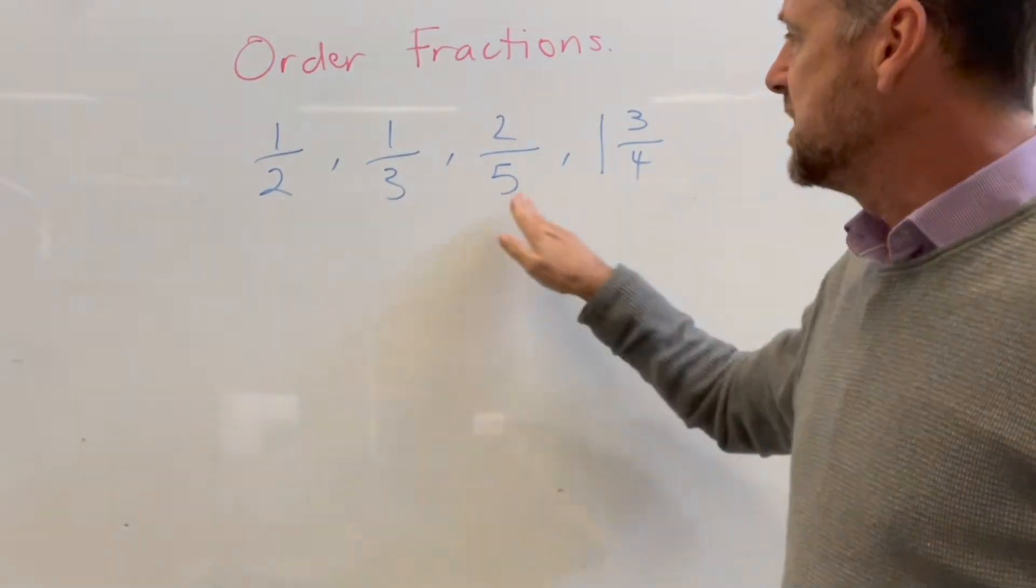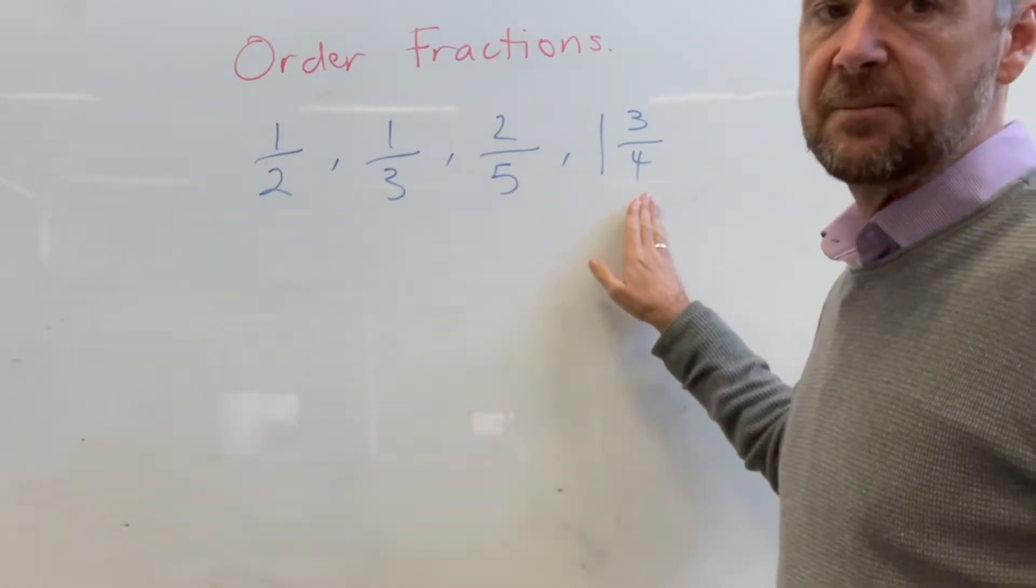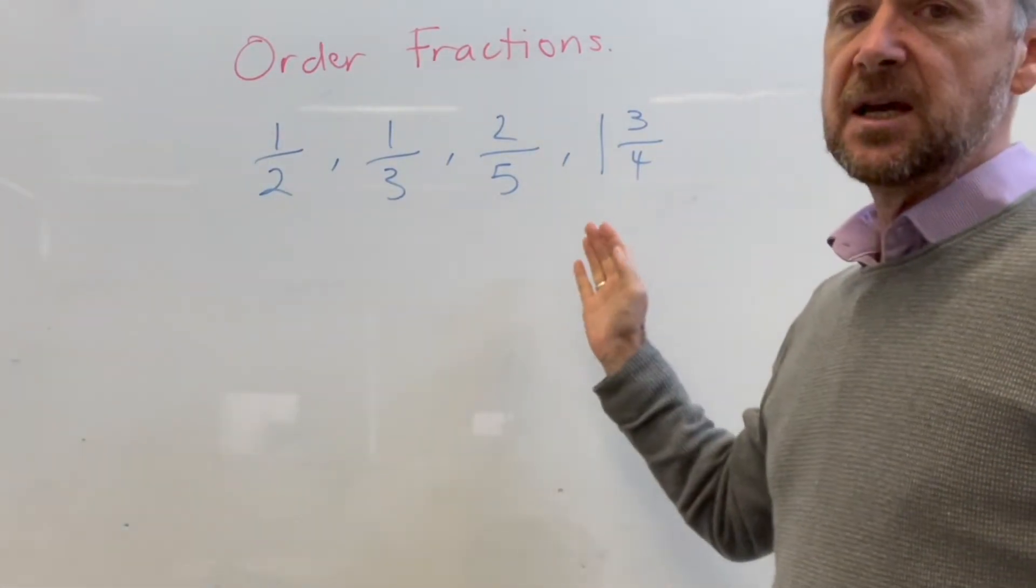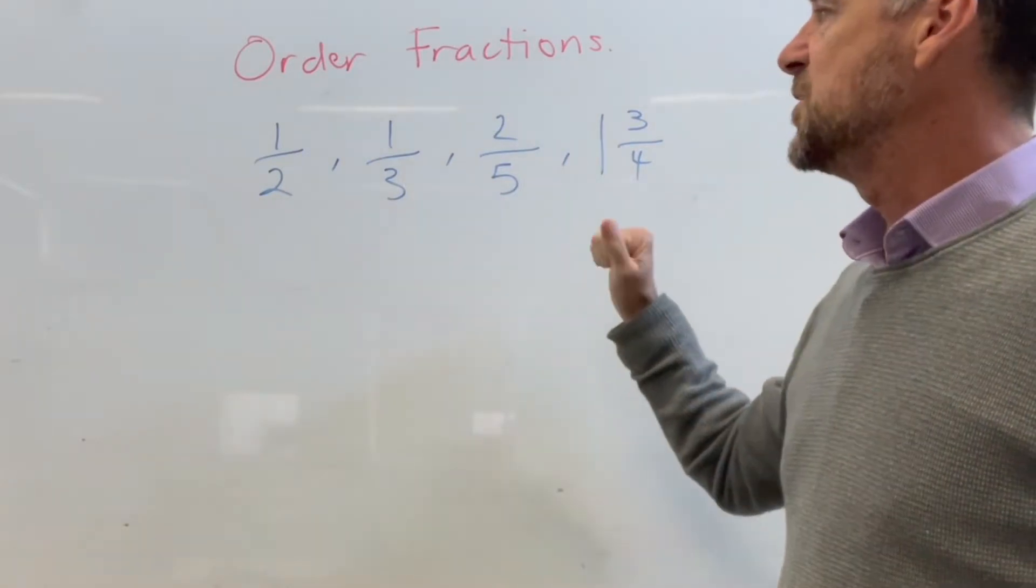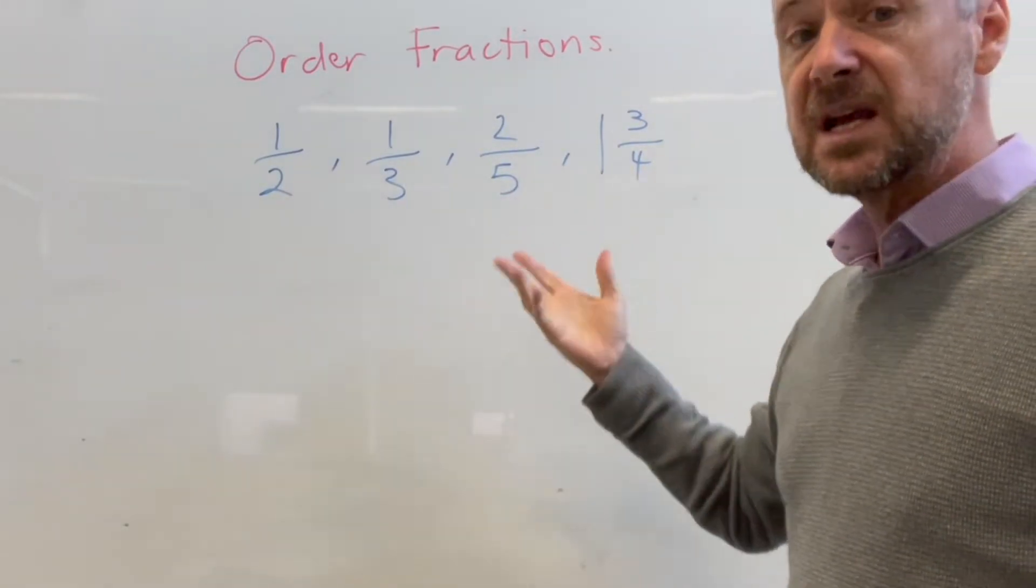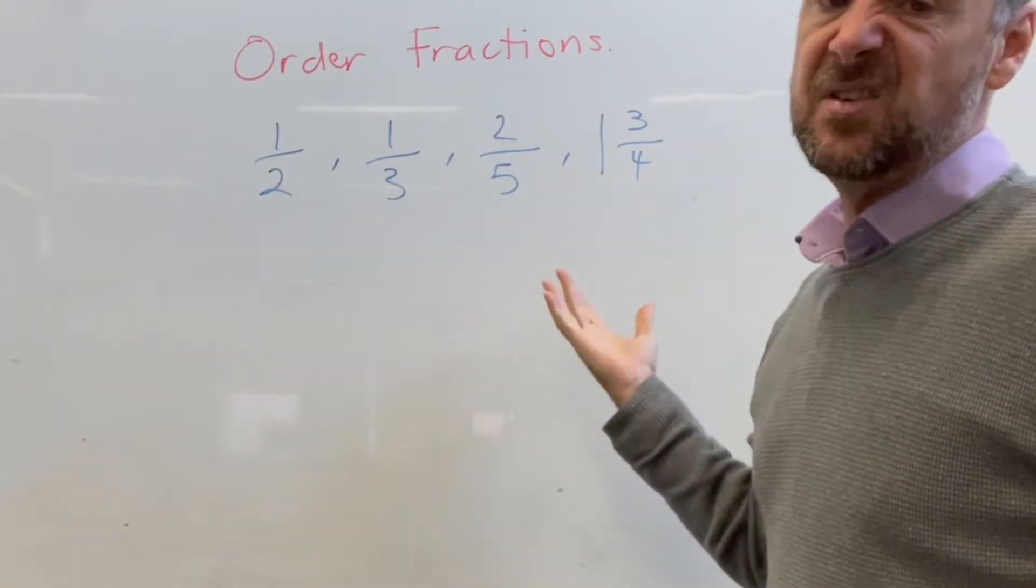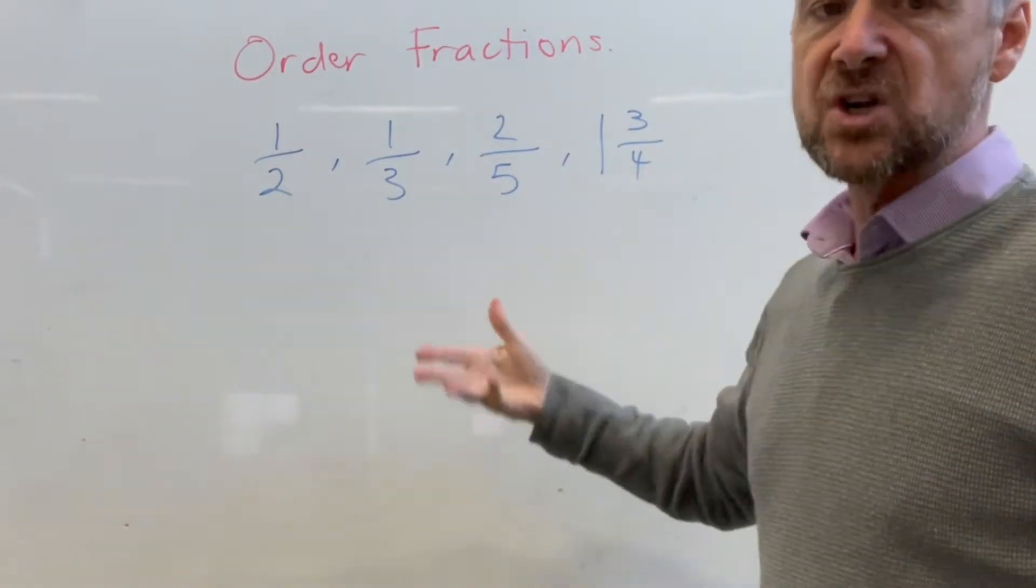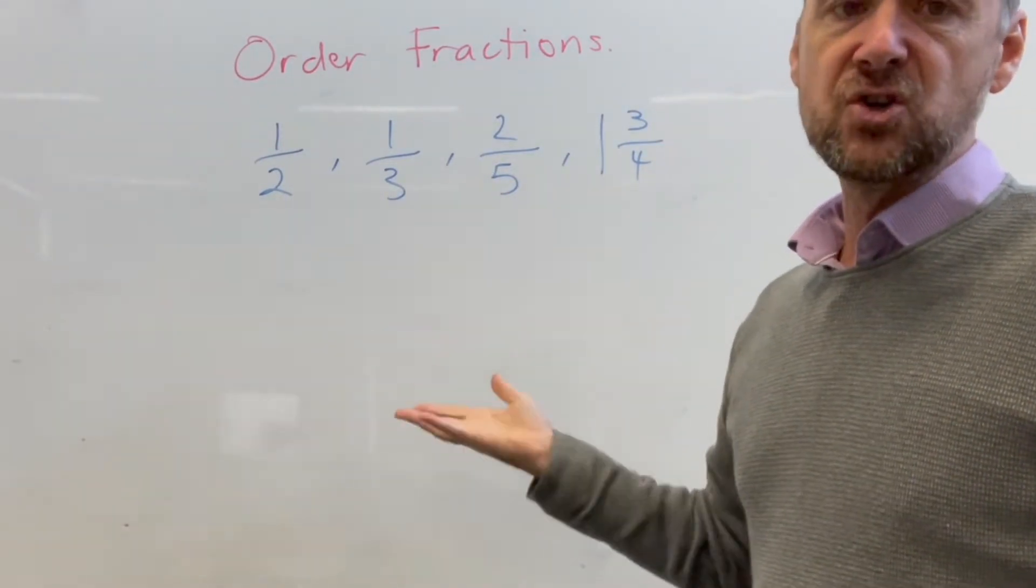Often you'll end up with a mixture of denominators. So the key here for any of these types of questions, whether you're given improper fractions, whether you're given negative numbers, and even if you're given decimals to be honest, is to change them all to the same thing so that you can do the comparison.